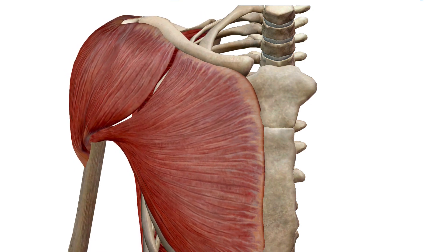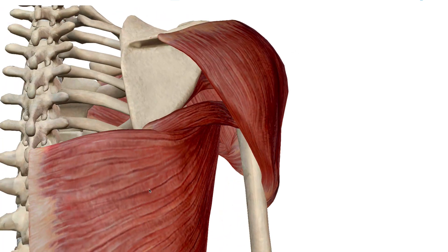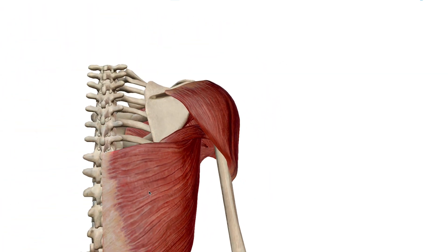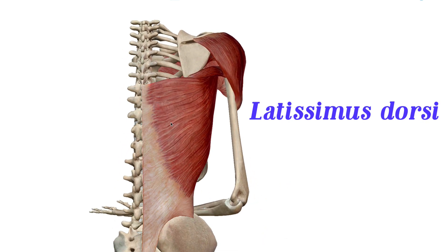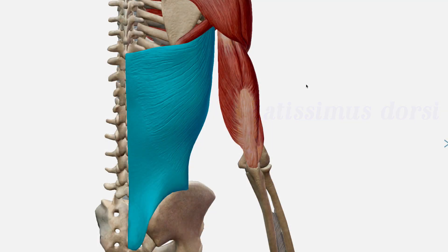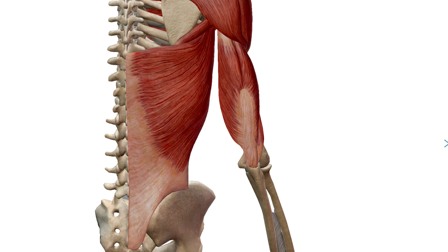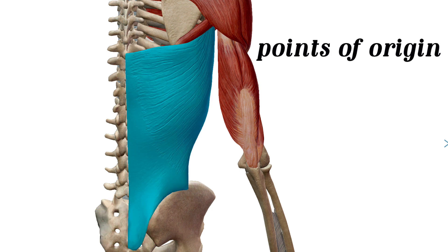Now let's look at the latissimus dorsi, shown right here. This is a very large muscle that attaches to the humerus and extends all the way through the back down into the sacrum.